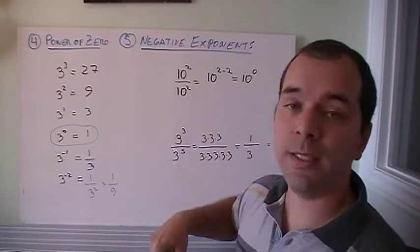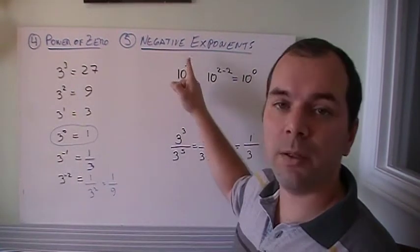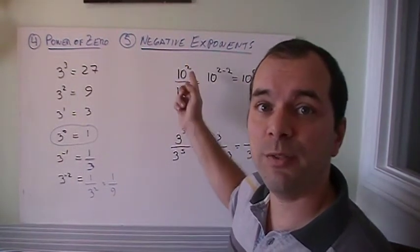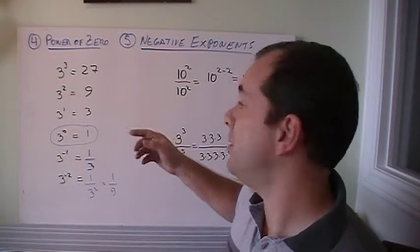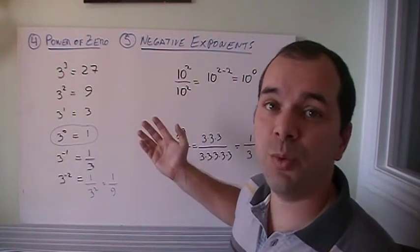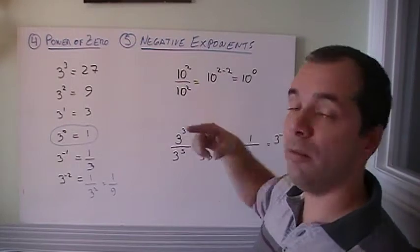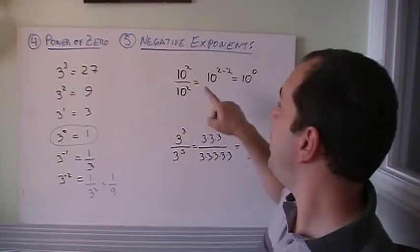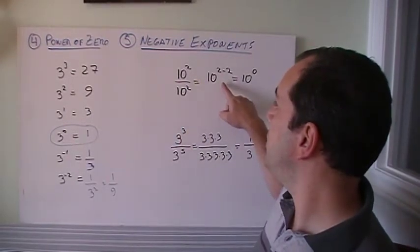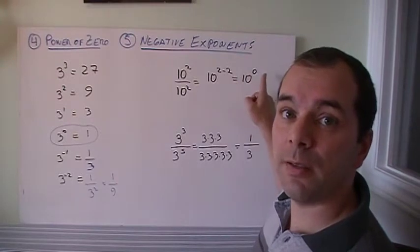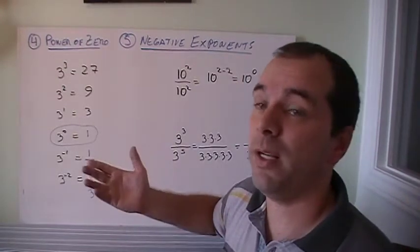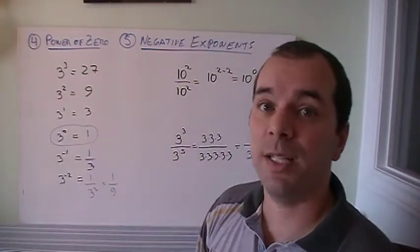10 to the power of 2 divided by 10 to the power of 2. Well, what is 10 to the power of 2? That's 100. And 10 to the power of 2 over here? It's 100 also. So 100 divided by 100 is equal to 1. But if we use the like bases, dividing like bases, we know that it's 2 minus 2, which gives us 0. So 10 to the power of 0 is also 1. Any number to the power of 0 is actually 1.